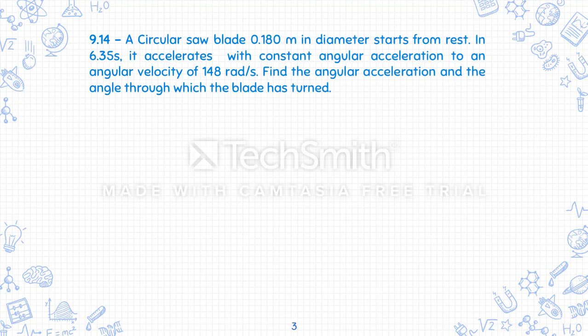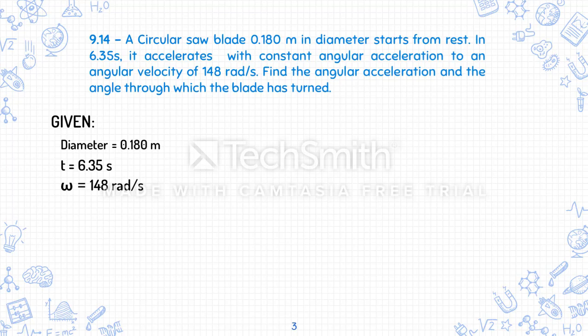Problem 9.40. A circular saw blade, 0.18 meters in diameter, starts from rest. In 6.35 seconds, it accelerates with constant angular acceleration to an angular velocity of 148 rad per second. Find the angular acceleration and the angle through which the blade has turned. Given: diameter = 0.18 m, time = 6.35 s, final angular velocity = 148 rad/s, and initial angular velocity = 0 rad/s. We are looking for angular acceleration and the angle.